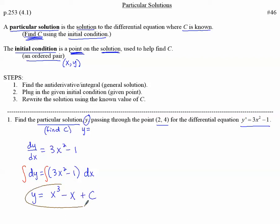This is a general solution because of the plus C. C gives us an infinite number of possible solutions, but we want a particular solution, so we need to find that C. We just found the antiderivative — the general solution. Now we need to look for the initial condition, that given point, and plug it in.